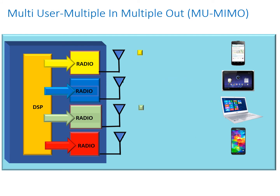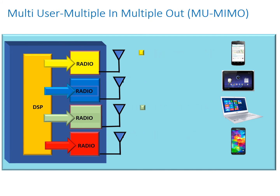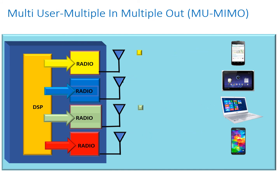We're not limited in this example to just four users. You could have many other users supported by the system, but the big benefit is we can support four users in parallel at any instant in time and do our round robin much more efficiently and much more quickly.